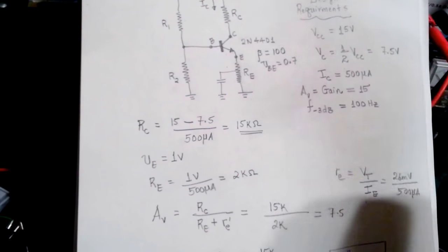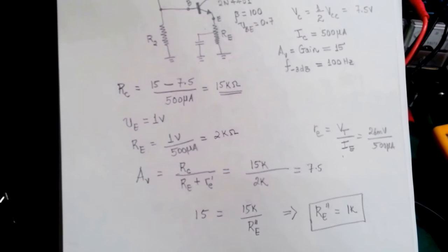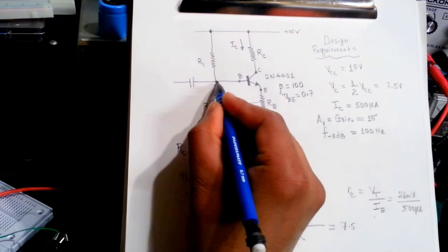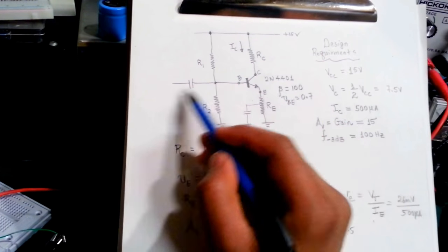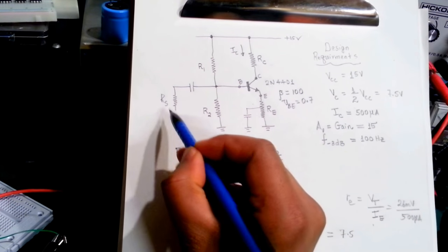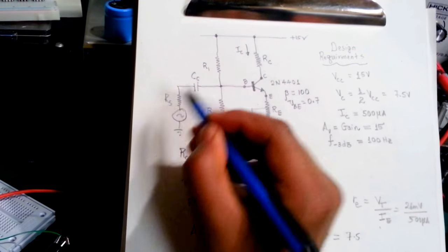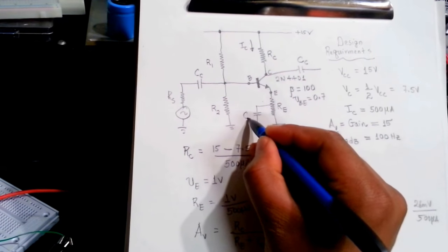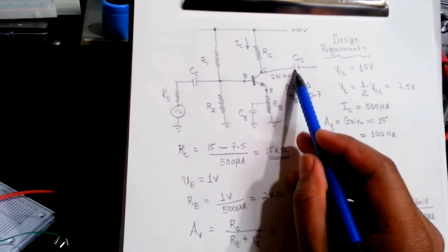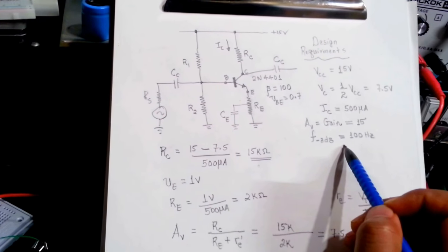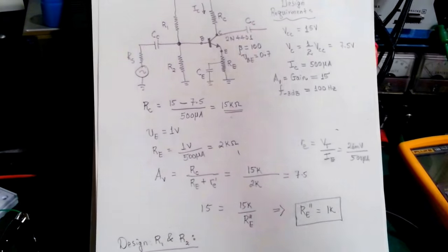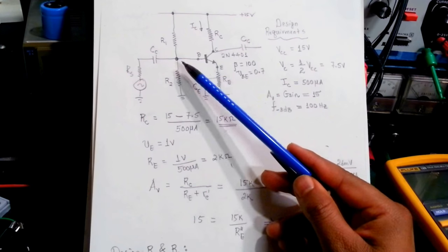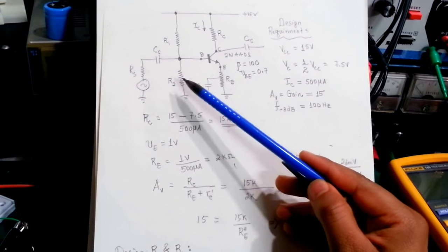We also need to isolate the input with a coupling capacitor C1 because the base will be at a DC voltage and we don't want our source — which has RS — to disturb the bias. We need a coupling capacitor on the input and a coupling capacitor CC on the output as well. CE will be the emitter bypass capacitor. So we need to design C1, C2, and CE for the low frequency cutoff point of 100 Hz. But first, let's select R1 and R2 to bias the transistor correctly.